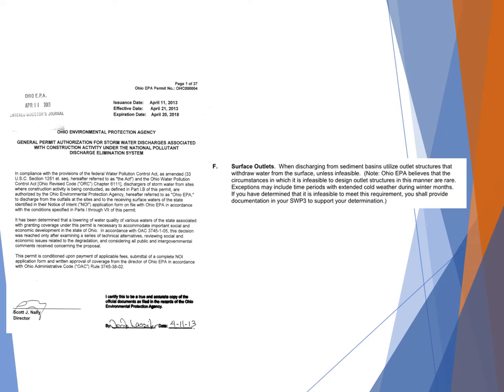Most construction general permits have a clause regarding surface outlets. For example, from the Ohio EPA: when discharging from sediment basins, utilize outlet structures that withdraw water from the surface unless infeasible. Most states also note that circumstances where it is infeasible to design an outlet structure in this manner are rare, thereby generally requiring surface withdrawal from most sediment basins.